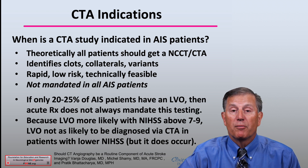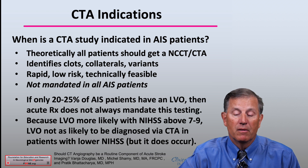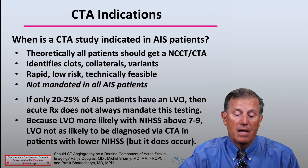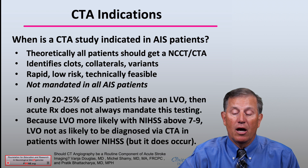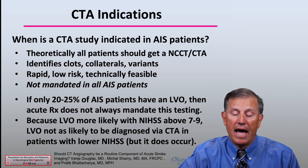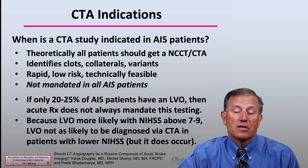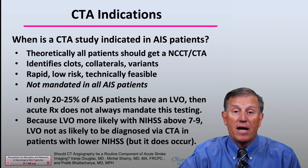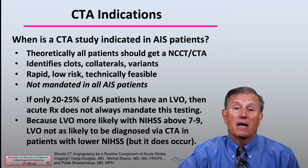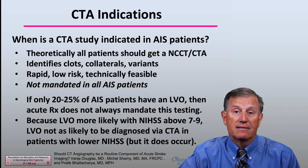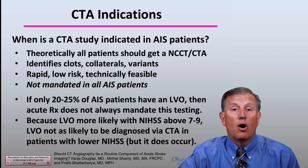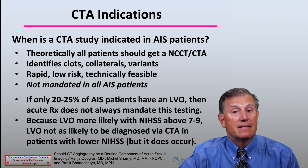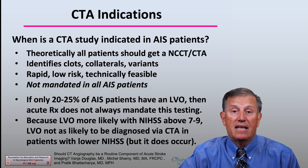If we assume that only about 20 to 25 percent of acute ischemic stroke patients have a large vessel occlusion, then the acute diagnostic paradigm and treatment approach does not always mandate this testing. Because an LVO is more likely with an NIH stroke scale above 7 to 9, LVO is not as likely to be diagnosed via CTA in patients with a lower NIH stroke scale, although it does occur on some occasions. Because there are not LVOs in all patients who present with stroke, it is not necessary that this test be done in all patients, even though it is preferred.